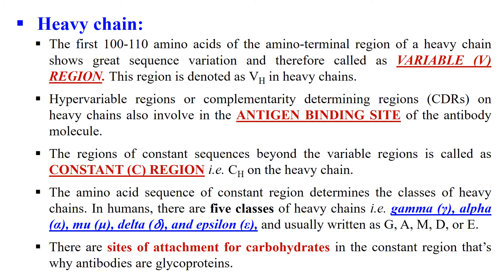Next, heavy chains. As with light chains, heavy chains also have a variable region which shows variation among different antibodies, and it is the region where the antigen binds. The lower part, beyond the variable region, is known as the constant region, which is responsible for the function of the antibody. On the basis of the constant region, antibodies generally have five classes: Gamma, Alpha, Mu, Delta, and Epsilon. The carbohydrate moieties are also attached to the Fc portion or constant region, which is why antibodies are known as glycoproteins.